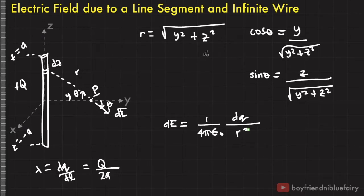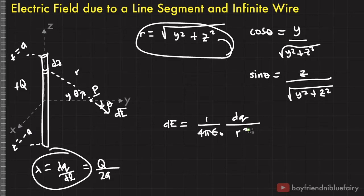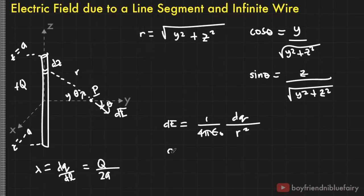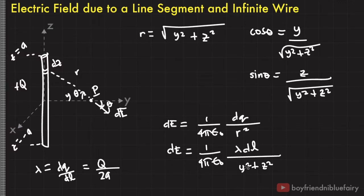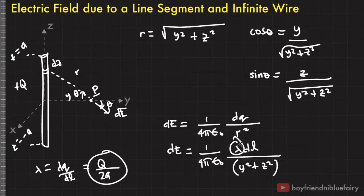Let's directly write the equation for the vector dE by starting with the general equation 2.2 that we derived in the previous video. Based on these equations, we can replace r with the square root of y squared plus z squared and dq with lambda dl. Lambda here is also equal to Q over 2a, so we can replace lambda with Q over 2a.